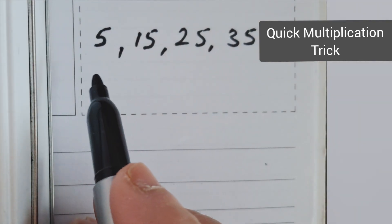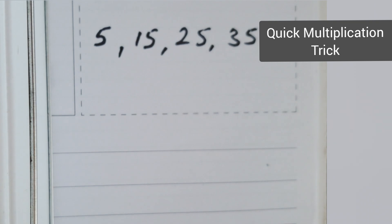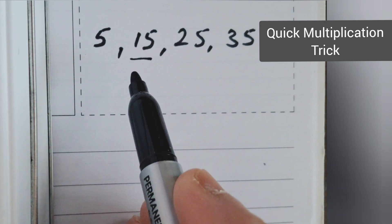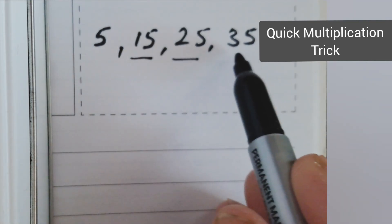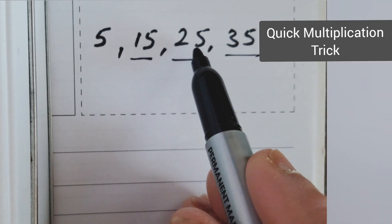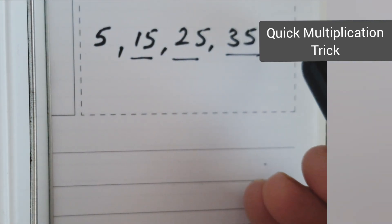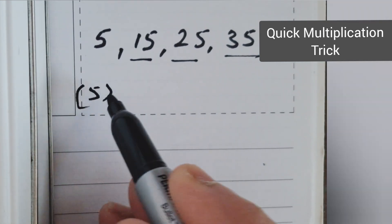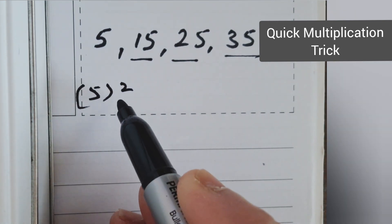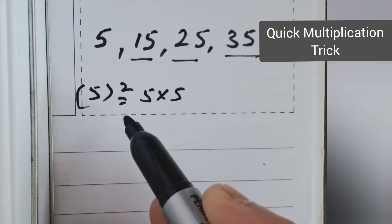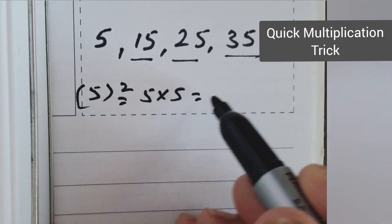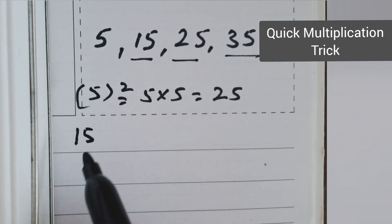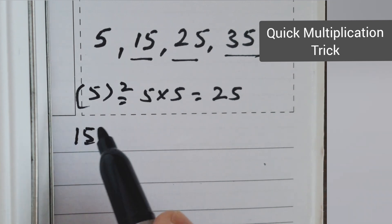Hello everyone. This two-digit multiplication trick applies only to numbers ending with 5, like 15, 25, 35, 45, 55, and so on. For example, the square of 5 means 5 multiplied by 5, which is easy — 5 times 5 is 25. Now when it's 15, it's a bit harder, so I'll show you how to do it quickly.